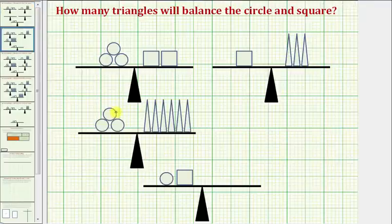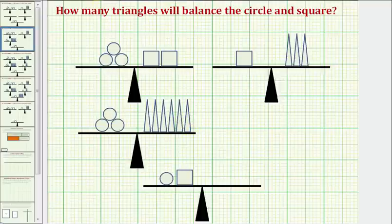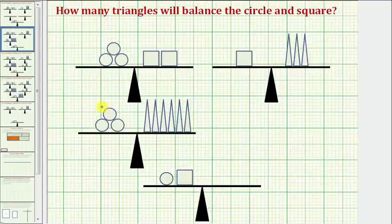we now know that three circles balance with six triangles, and if three circles balance with six triangles, we should be able to recognize that each circle will balance with two triangles.